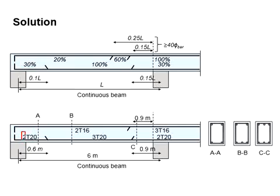As you need to maintain at least 2 bars at the support, that will be 2T20. Another 2T20 will be here. The 0.1L will be equivalent to 600mm and 0.15L will be equivalent to 900mm.